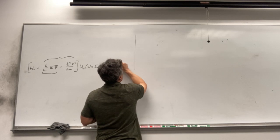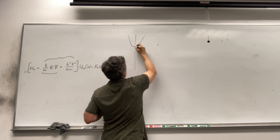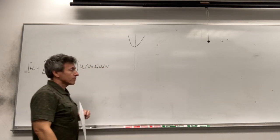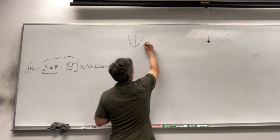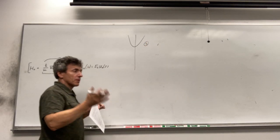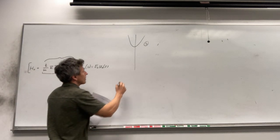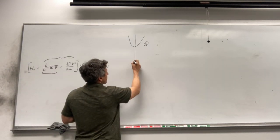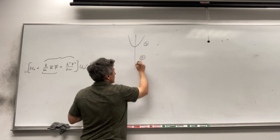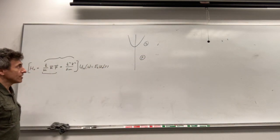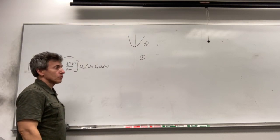We consider the following structure. The conduction band for direct band gap semiconductors usually has S-symmetry of S-orbitals, so it has angular momentum zero and it is isotropic. The valence band has P-symmetry, meaning there are three valence band states: Px, Py, and Pz symmetry, corresponding to angular momentum one.